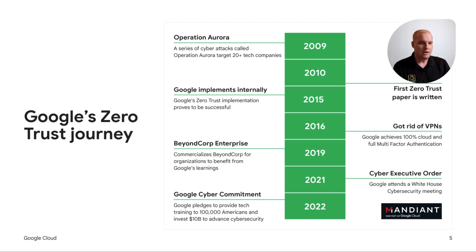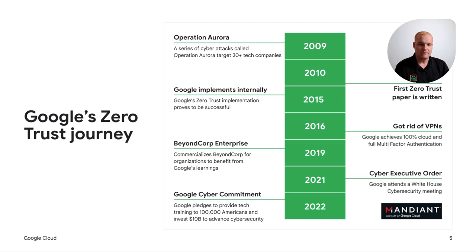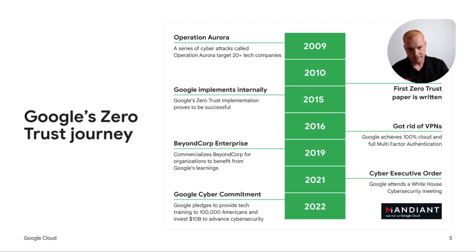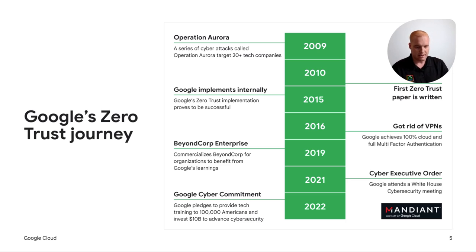In 2021, the Biden administration released the Cyber Executive Order 14028. Google attended a cybersecurity meeting at the White House. In 2022, Google made a cyber commitment and pledge to provide training to 100,000 Americans and invest $10 billion to advance the field of cybersecurity. Google also acquired Mandiant to bolster our portfolio of security services, especially when it comes to advanced actors and securing air gap clouds.